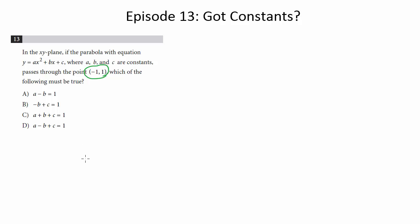Luckily here, they do us the work because they give us this point negative 1, 1. This is the x-coordinate, this is the y, so you're going to plug this in for x and y and see what develops. So let's go ahead and do that. We're going to have 1 equals negative 1 squared, which is 1, times a is just a, plus b times negative 1, so it's minus b, and then plus c.